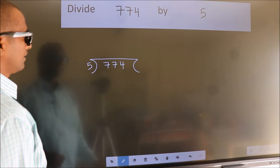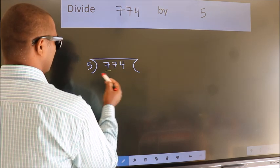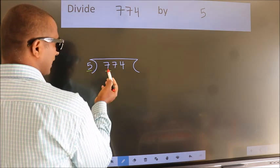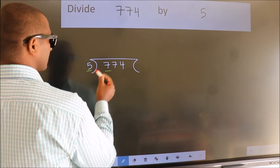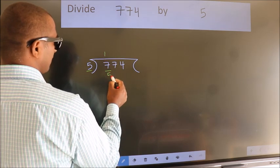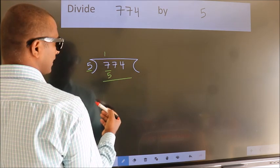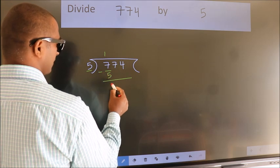Next, here we have 7, here 5. A number close to 7 in the 5 table is 5 once 5. Now we should subtract. We get 2.